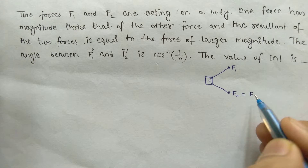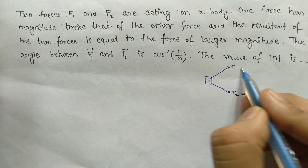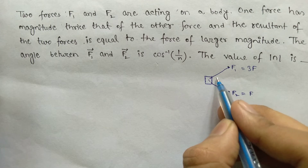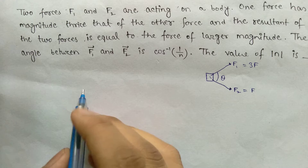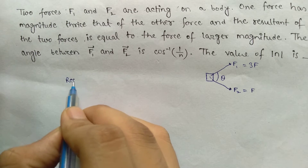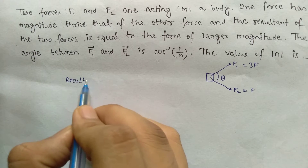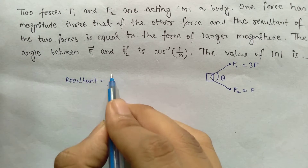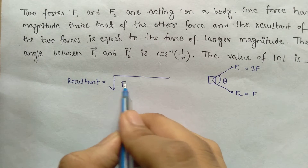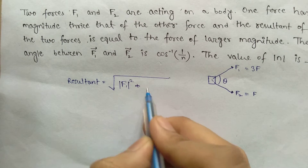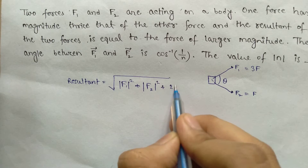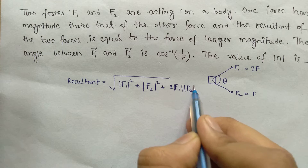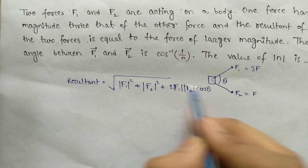Let F1 have magnitude F and F2 have magnitude 3F. The resultant is equal to the square root of |F1|² plus |F2|² plus 2|F1||F2|cosθ.